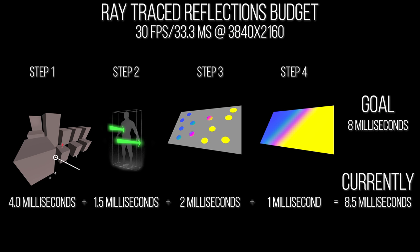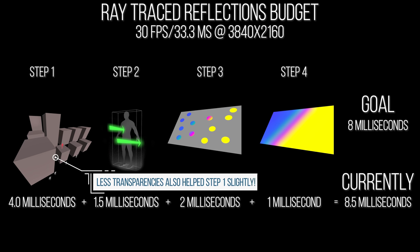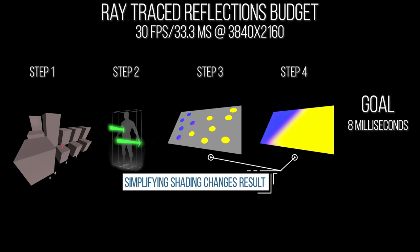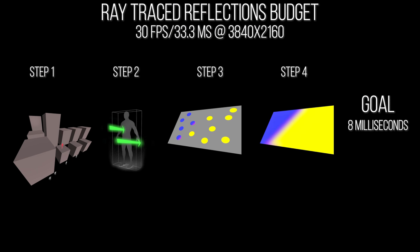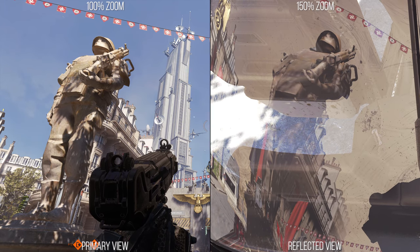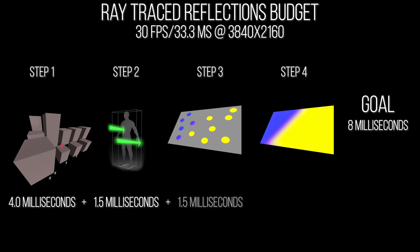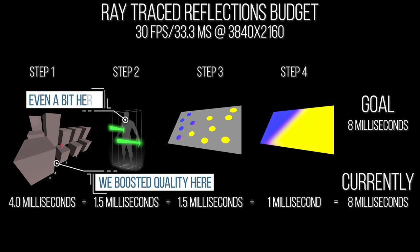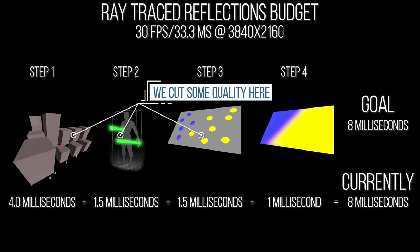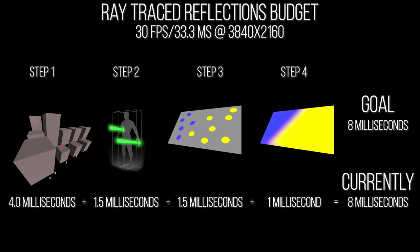We go back to our budget chart and we're almost there, but still a tiny bit over budget. So one last optimization can be made in step three — shading. Looking again at that screenshot, the lack of fine grain weave detail on Spider-Man's suit in the reflection — detail that is on his real suit — is because simplifying the material in the reflection requires less time to shade. Other games with ray traced reflections, like Wolfenstein Youngblood, do this same trick as well. In the end, by doing this we've hit our theoretical eight millisecond budget goal: we've increased quality in some areas by including reflections for objects far away, while decreasing quality in others like resolution and the dynamism of certain objects.